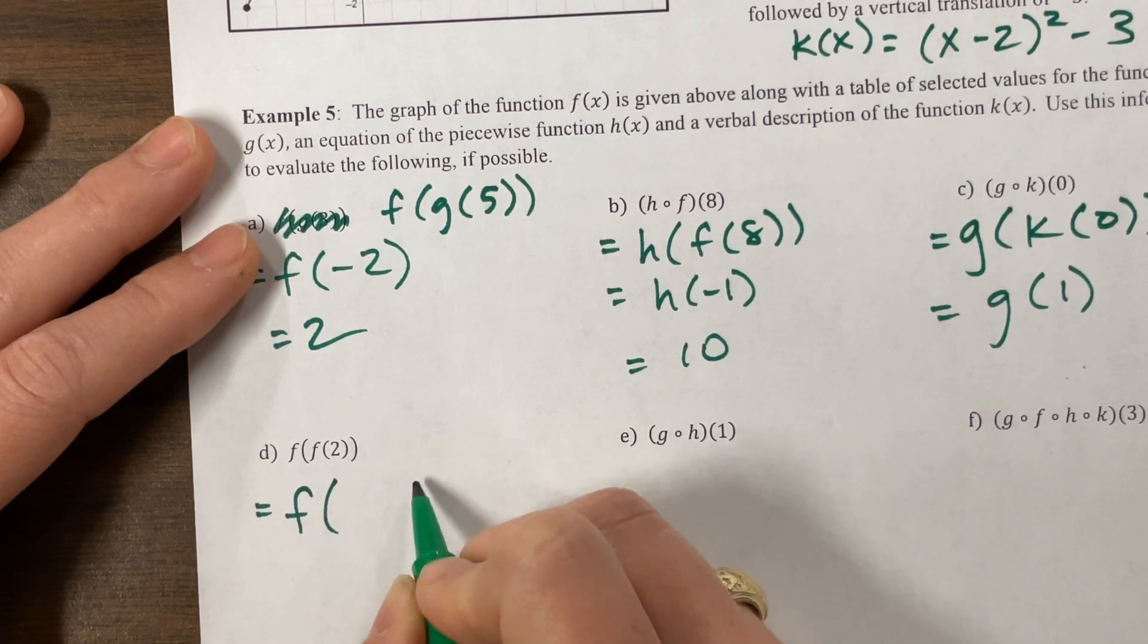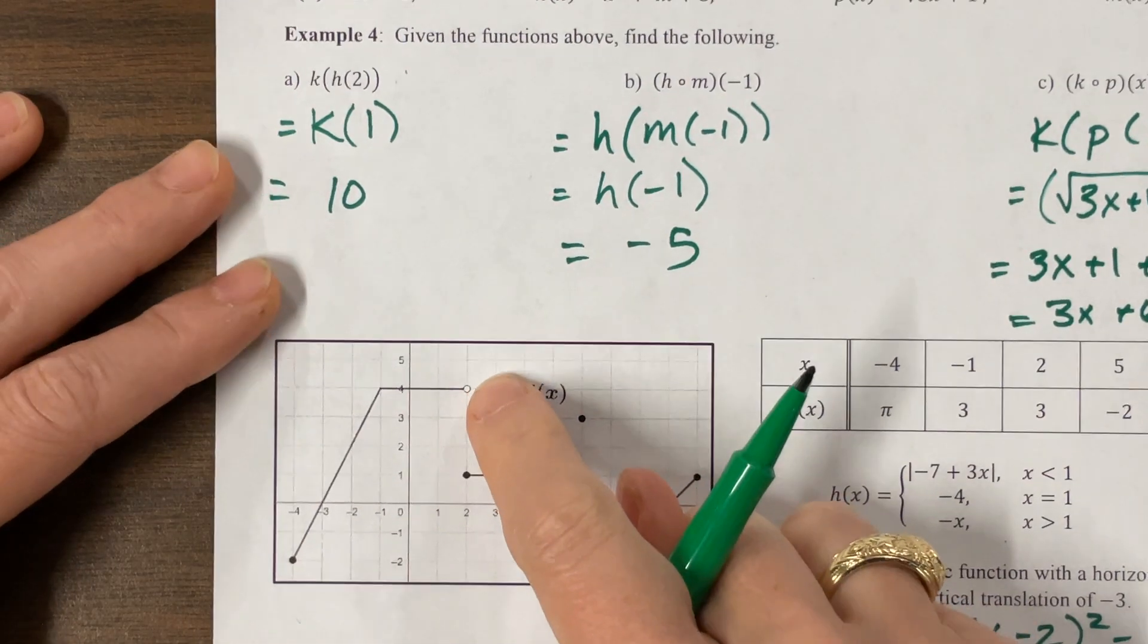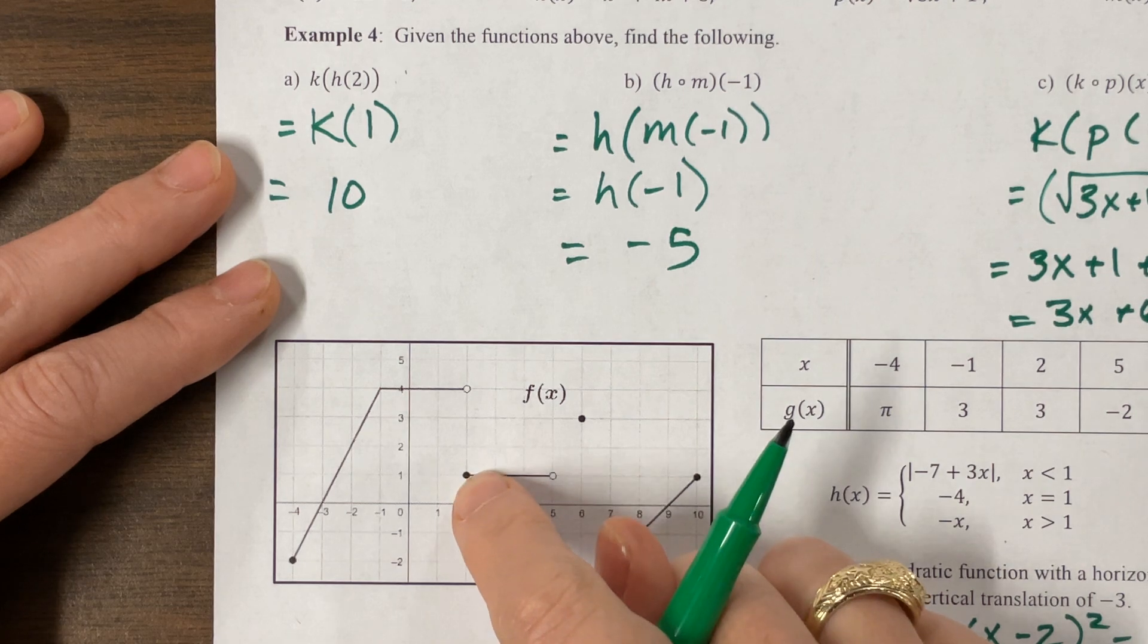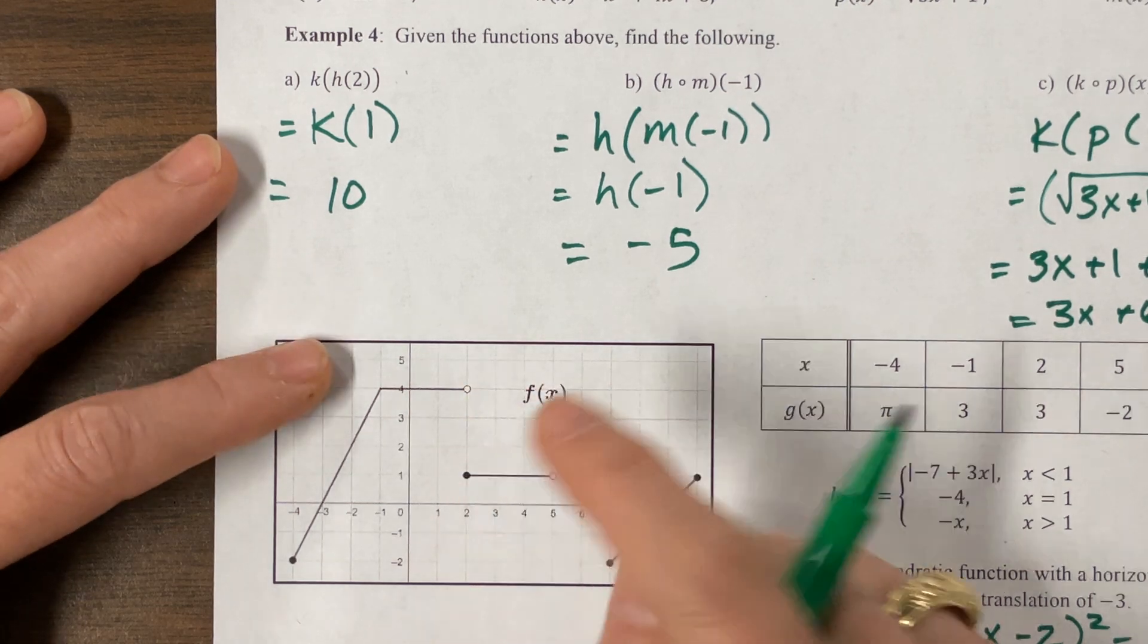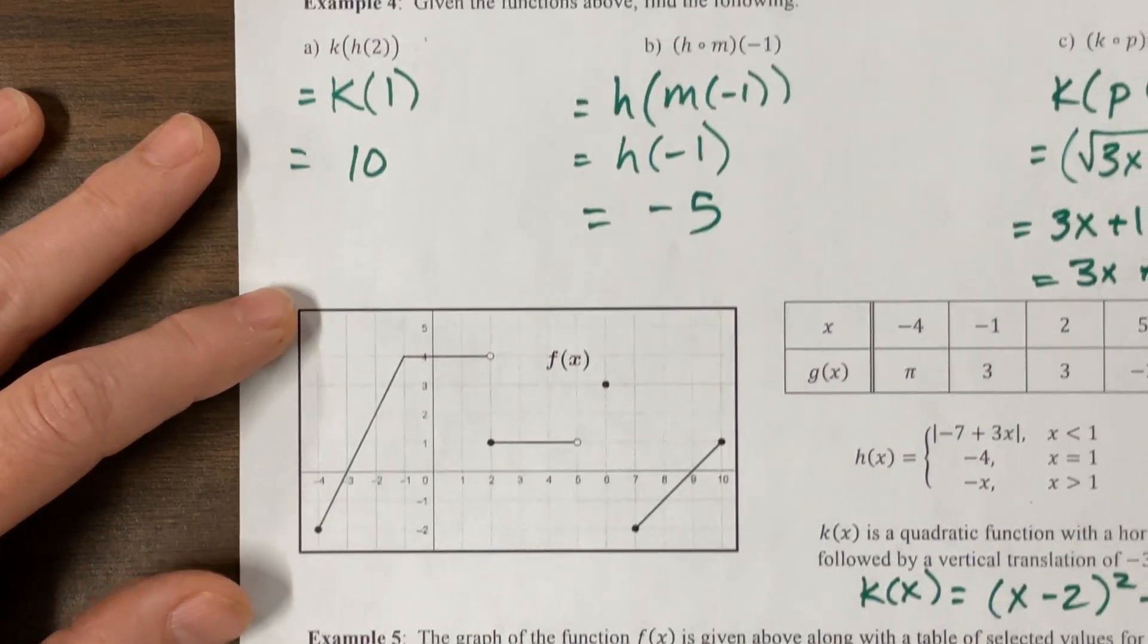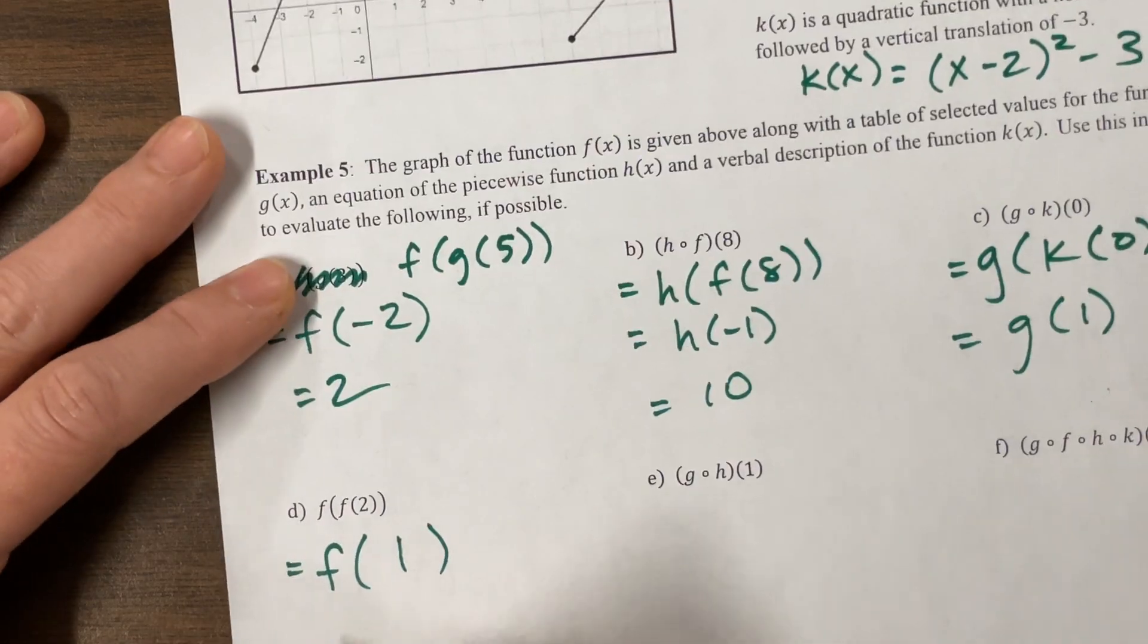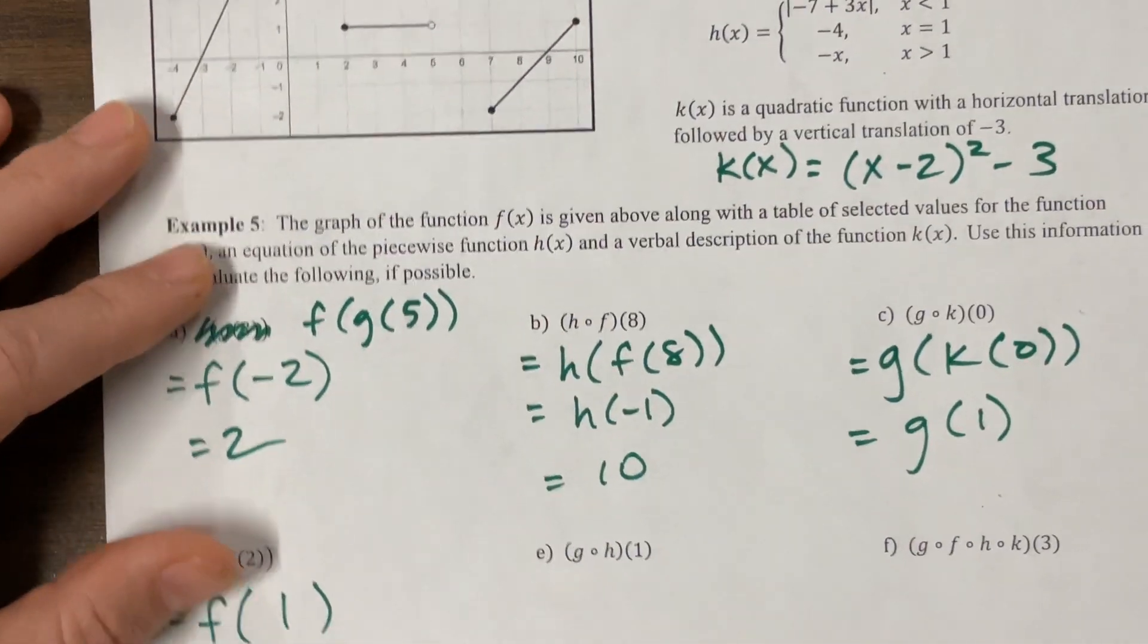F of f of 2. When I look at my graph, f of 2. Here's an open circle and here's a closed circle. So we have to use the closed circle because it's not defined up here. It's defined here. So this gives us f of 1. And now when I come back to f of 1, it's equal to the y value of 4.